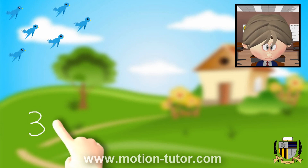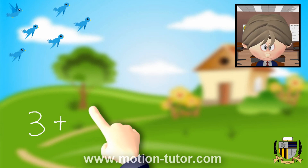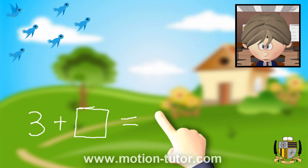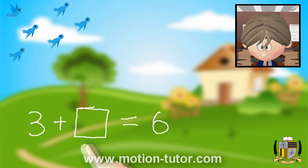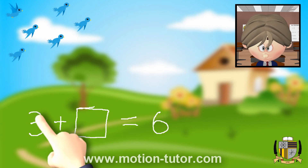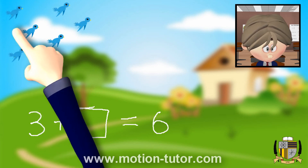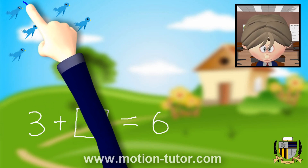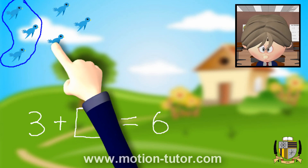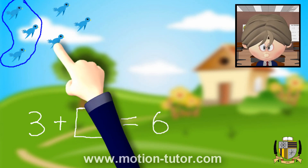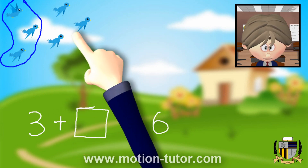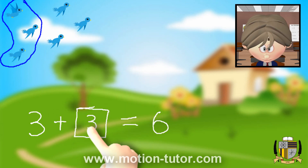It's three birds plus... I'll just put a little box here. I don't know how many birds joined later. And together, that equals six total. So how many birds joined the original three? Remember, there were three. Here are the three birds that were flying around, and we can clearly see three joined them.